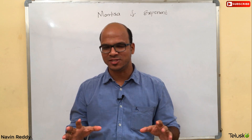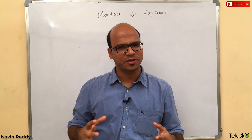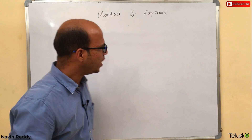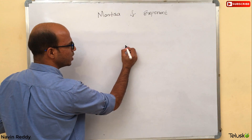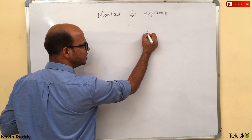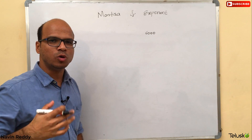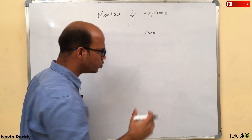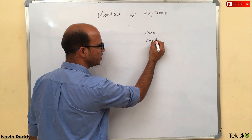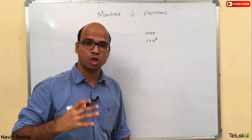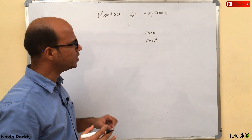Now what exactly does this mean? Going back to secondary school where we talked about Mantissa and Exponent for the first time. Let's say we have the number 6,000. You can represent it as 6 into 10 raised to 3. This is called the normalized form — 6 into 10 raised to 3.